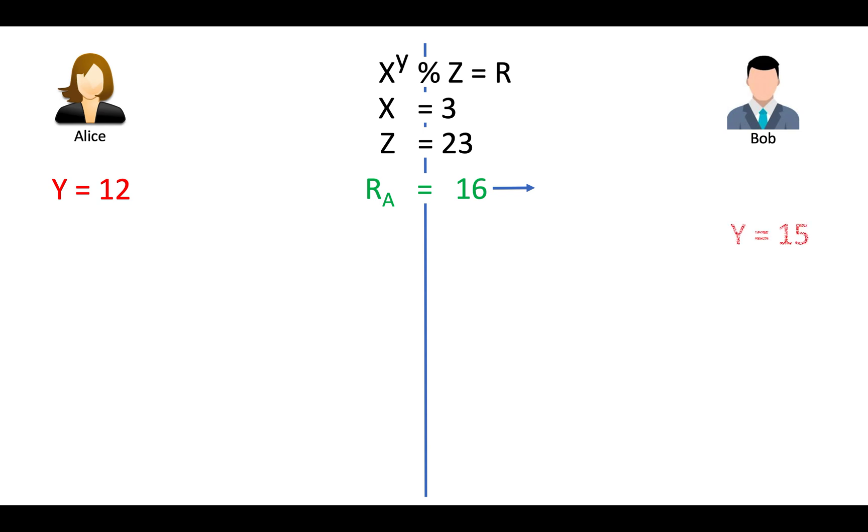Now Bob generates y equal to 15, Bob's secret. Calculate Rb, send it to Alice. Alice reconsiders formula, replaces x with Rb and calculates the key. On the other side, Bob also reconsiders same formula, replaces x with Ra, calculates the key. You can see here how both have protected their secret info and still derive the same key.